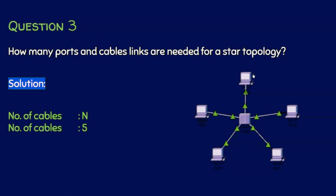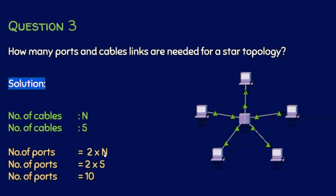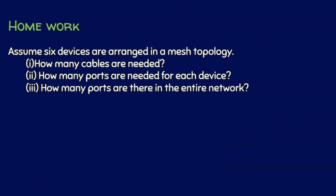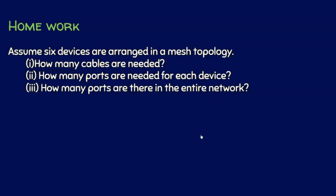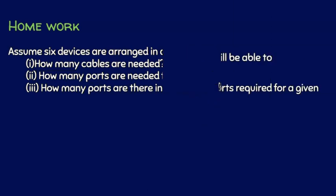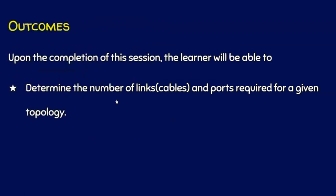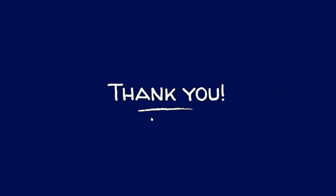The answer to question 3 is: if there are n nodes, we need n cables — in this case n equals five, so we need five cables. The number of ports equals two into n, where n equals five, giving ten ports. This accounts for ports in all n devices as well as the intermediary central device. Homework: assume six devices are arranged in a mesh topology — find how many cables are needed, how many ports each device needs, how many total ports are in the network, and derive a formula. Post your answers in the comments. I hope you can now determine the number of cables and ports required for a given topology. Thank you for watching.